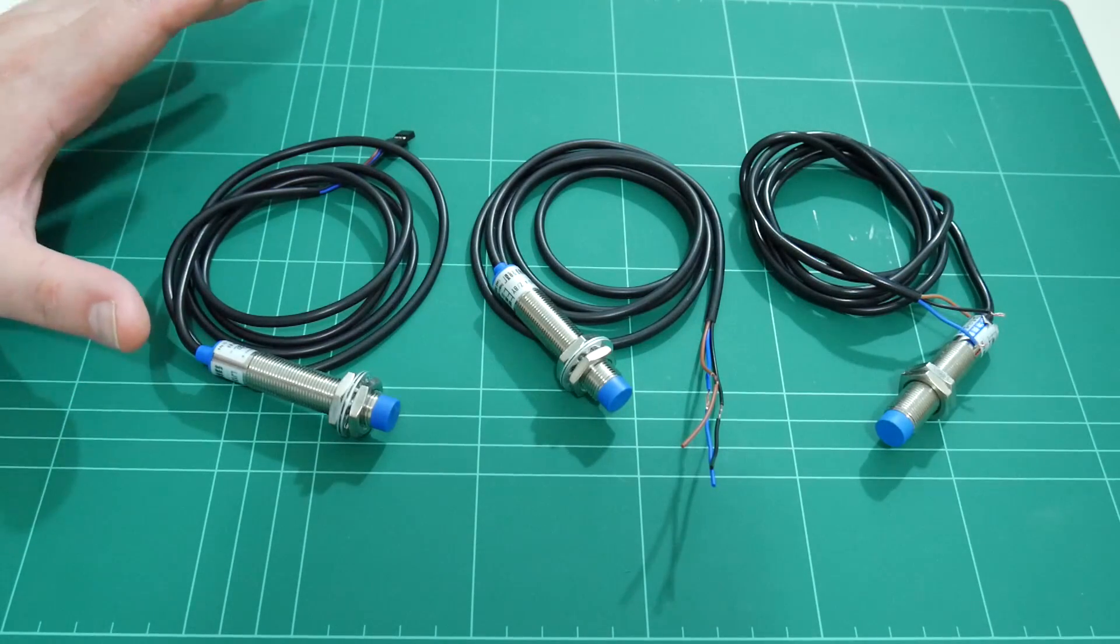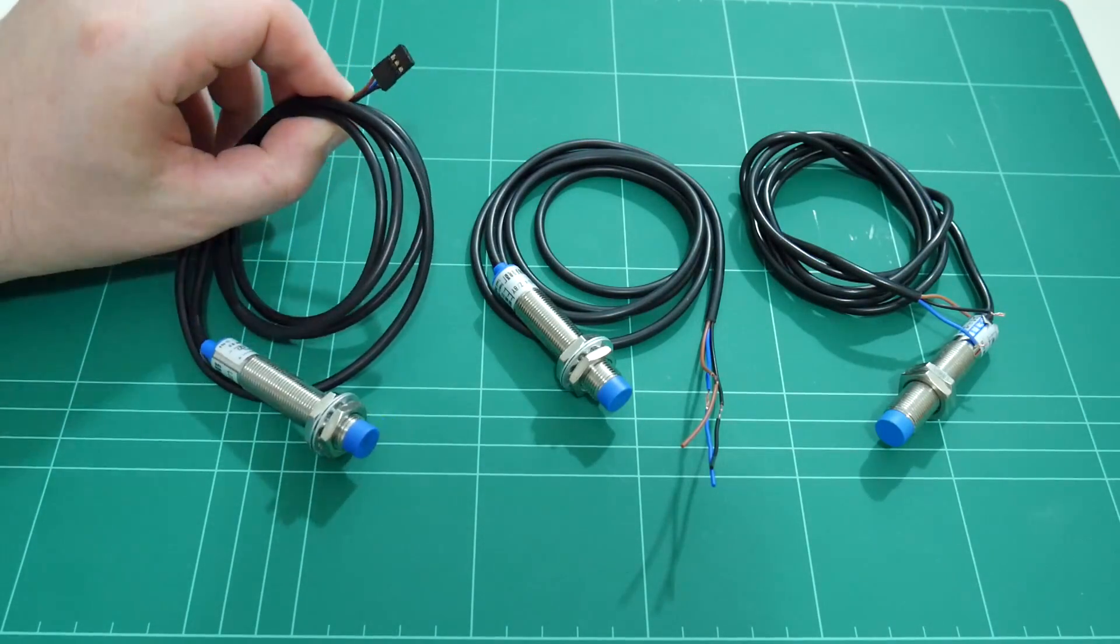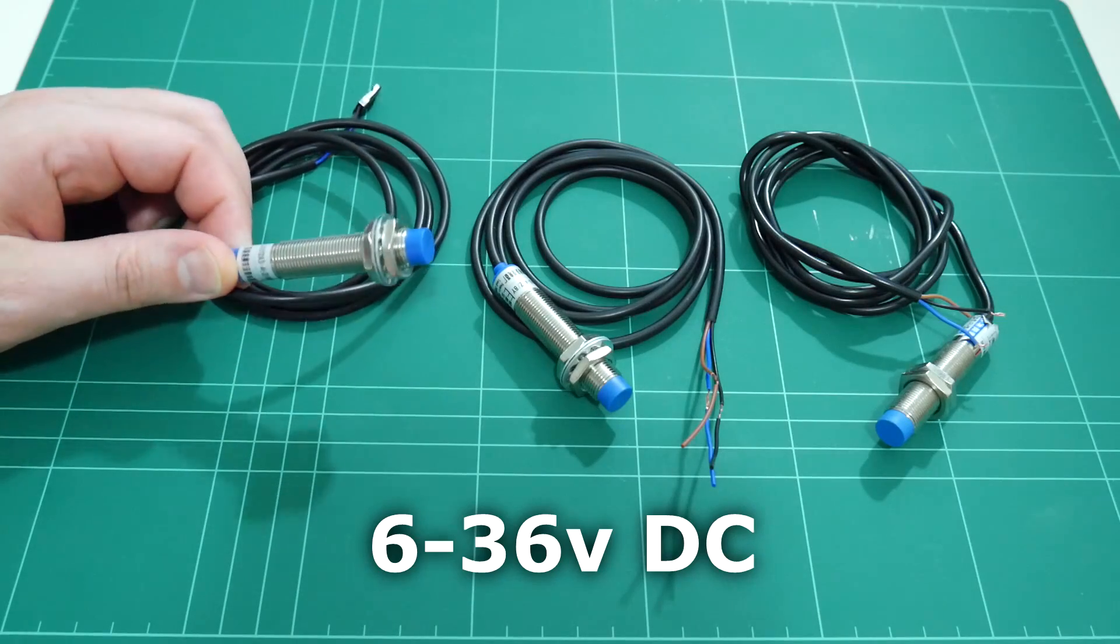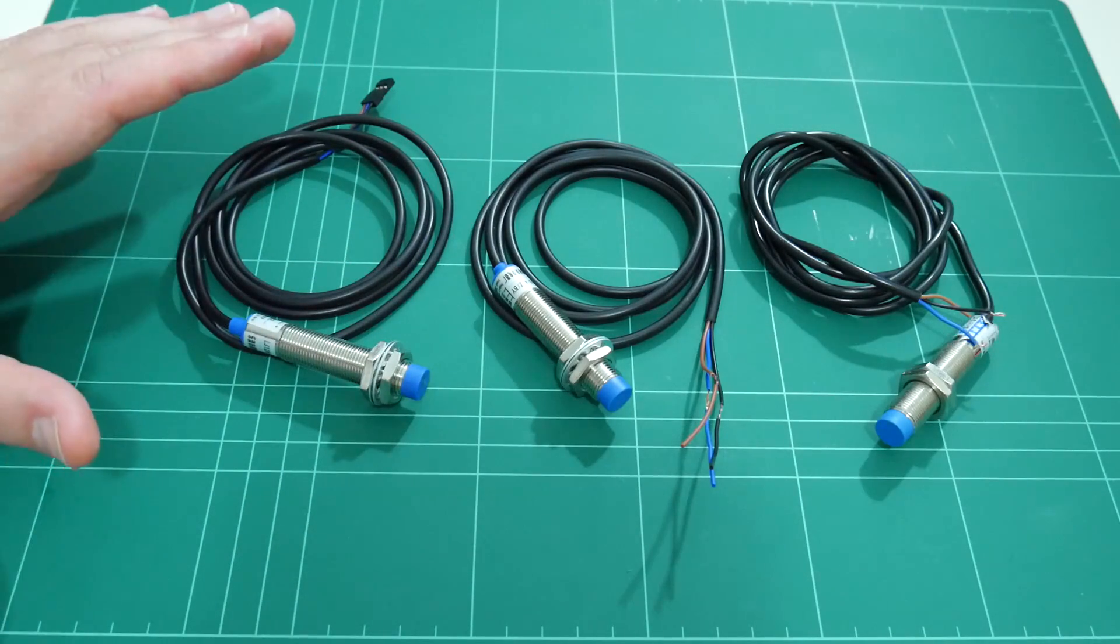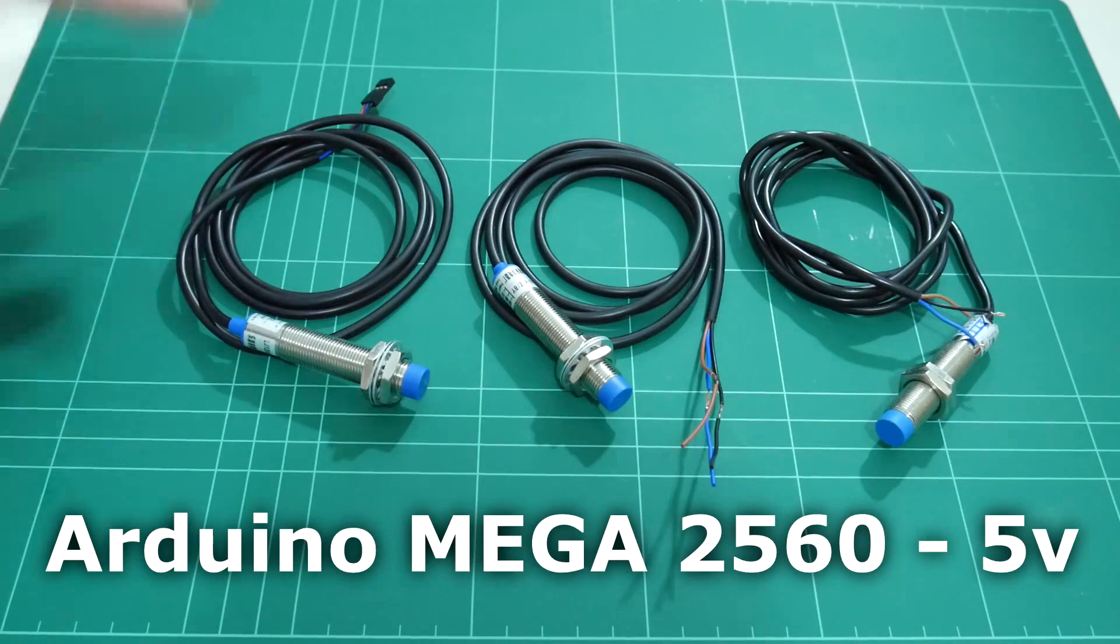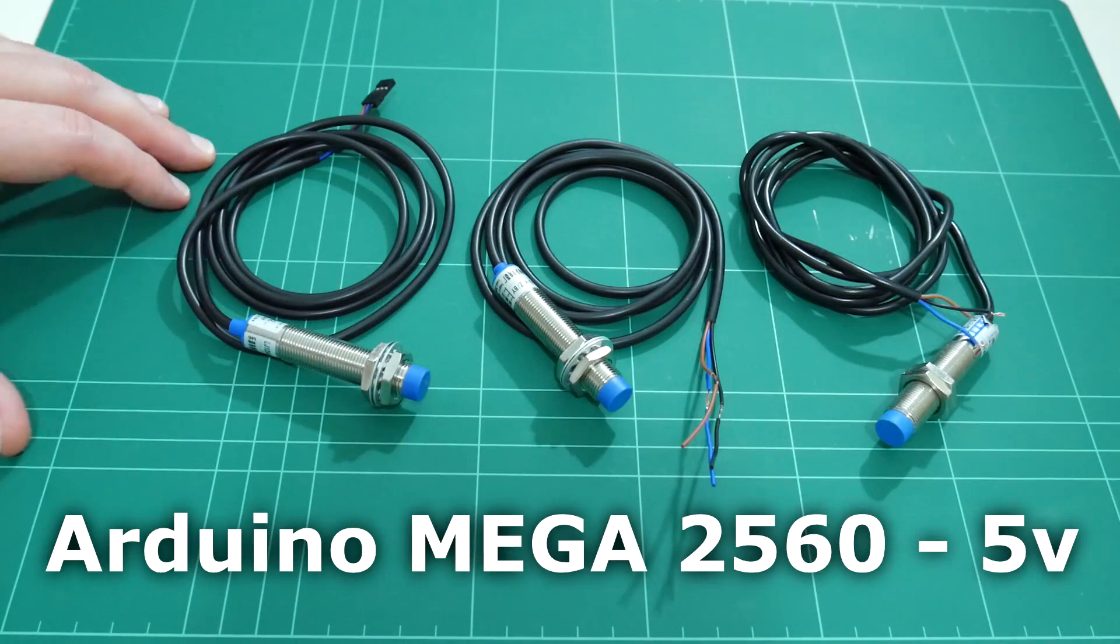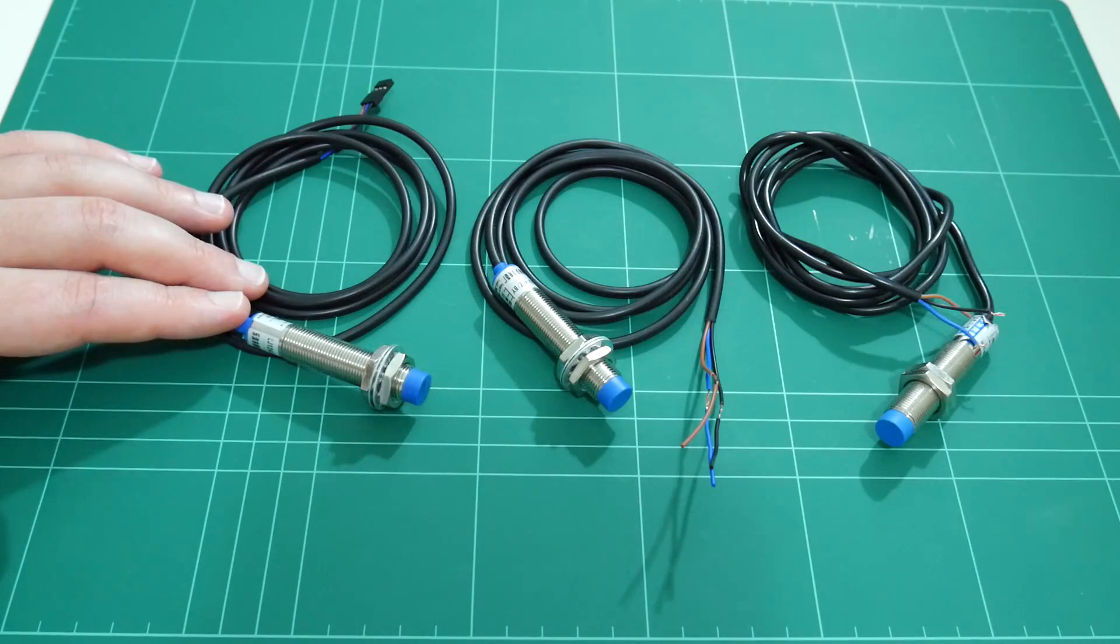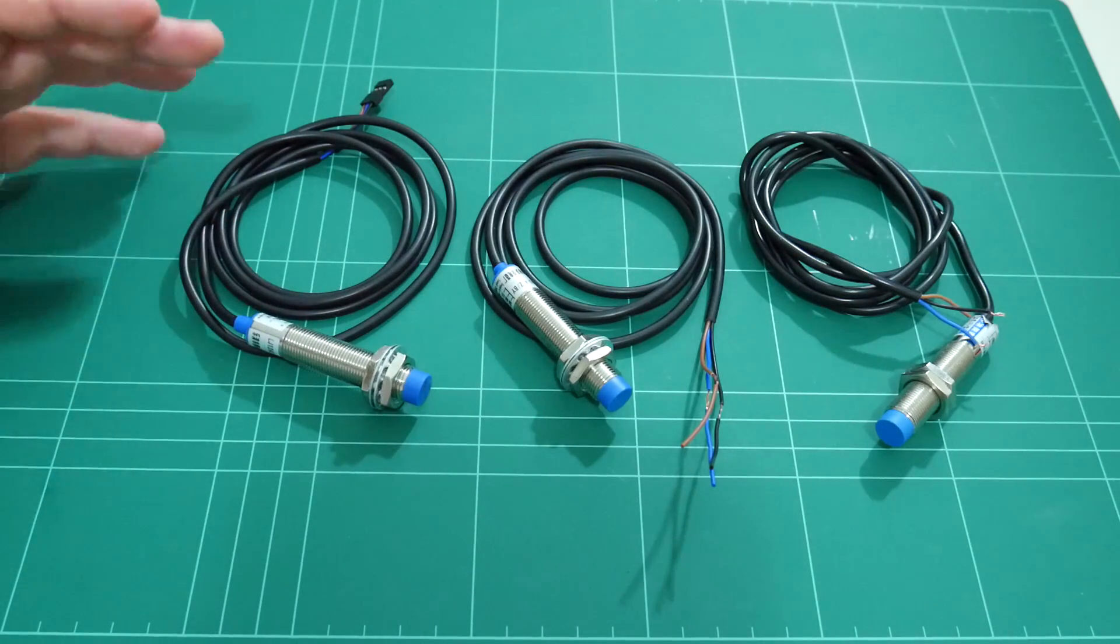What I believe is important is if your probe works at 5 volts. These probes have a working voltage range between 6 and 36 volts DC. That means we can't simply plug them into our electronics, as we only supply 5 volts. Therefore, you'd need to power the probe directly from a 12 volt source, which means the output sense wire will also give 12 volts.